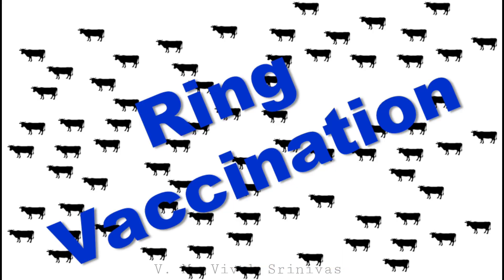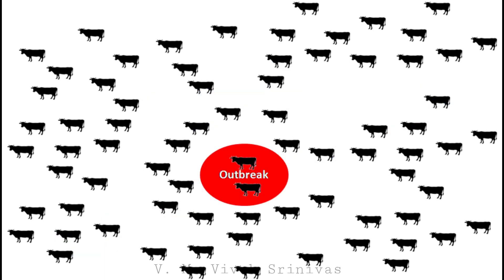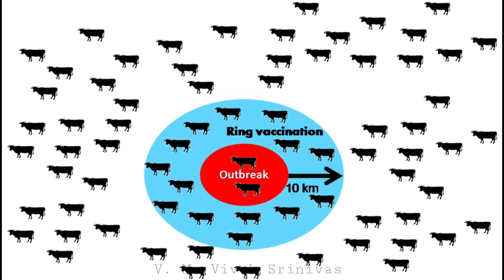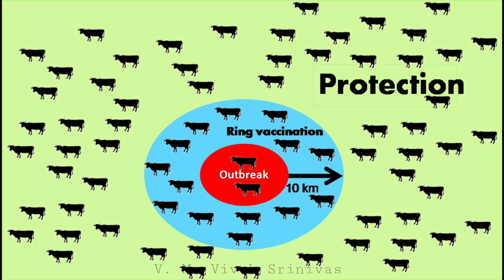Ring vaccination was followed during outbreaks. Following an outbreak situation, vaccination is done for animals within a 10 km radius within 5 days. This type of ring vaccination program indirectly provides protection to other animals in the population and confers herd immunity to the susceptible population.